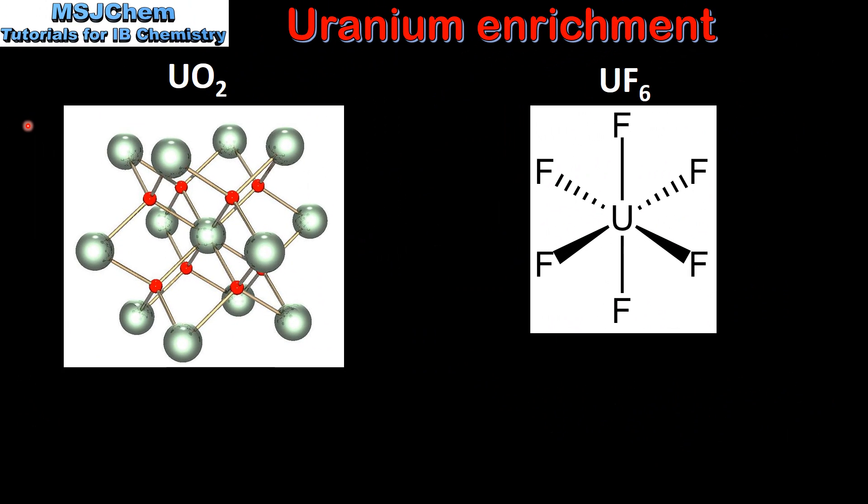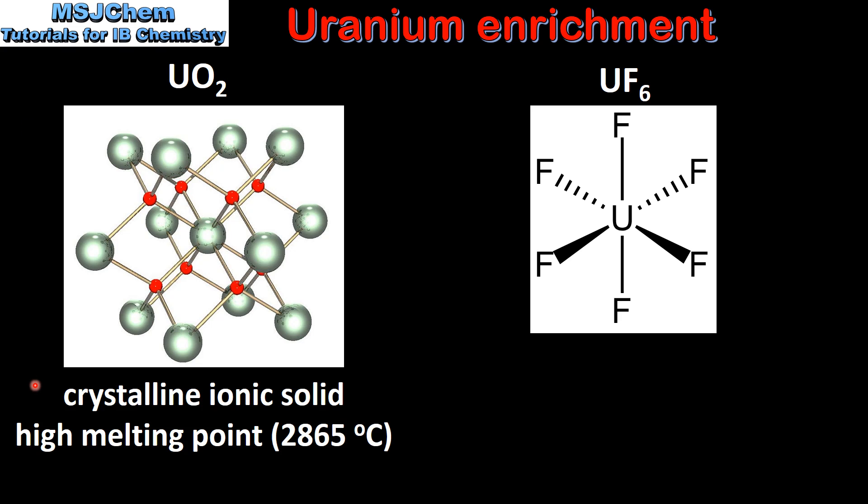Next, we'll compare the bonding and structure of uranium oxide and uranium hexafluoride. Uranium oxide is a crystalline ionic solid with a lattice structure which you can see here. It has a high melting point of 2865 degrees C.